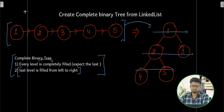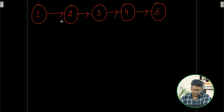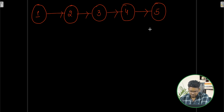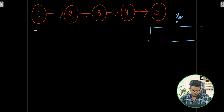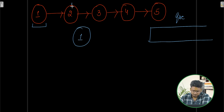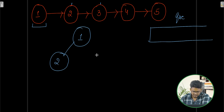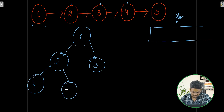Now let's see the approach. They have given us a linked list and we have to create a complete binary tree from it. We will make use of a queue. First, I will take the first node and make it the root node. The next two nodes will be its child nodes — node 2 as the left child and node 3 as the right child.